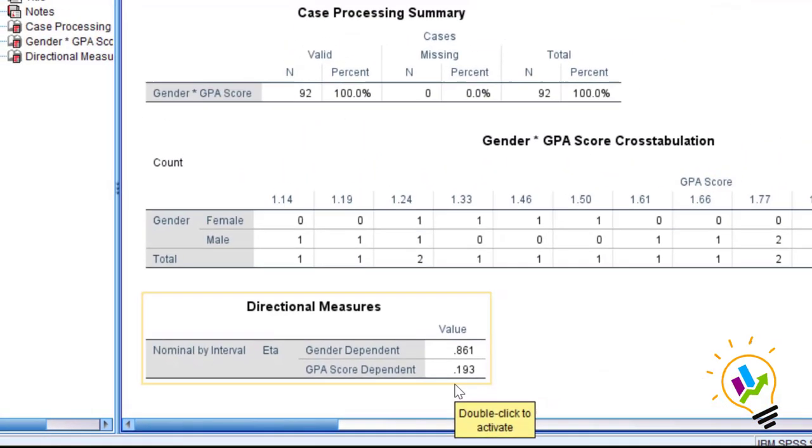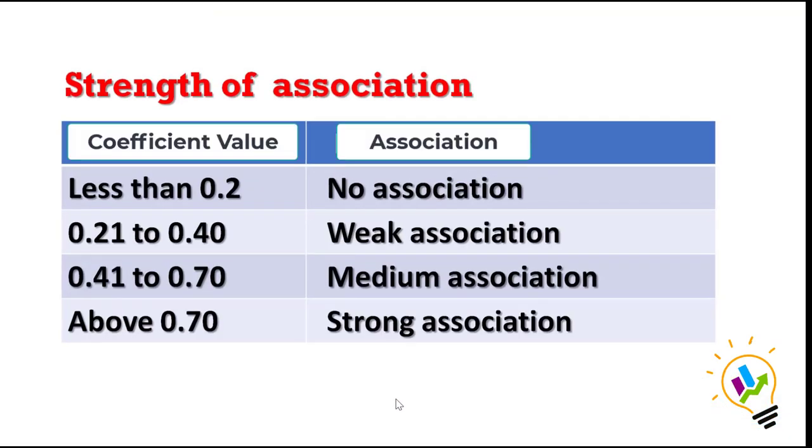Now let us see the association. The coefficient value of the correlation is 0.193. The strength of association: if it is less than 0.2, no association; if it is between 0.21 to 0.4, weak association; if it is between 0.41 to 0.70, medium association; above 0.7, strong association. Since in our case we got the coefficient value 0.193, which is less than 0.2, there is no association between gender and GPA score.